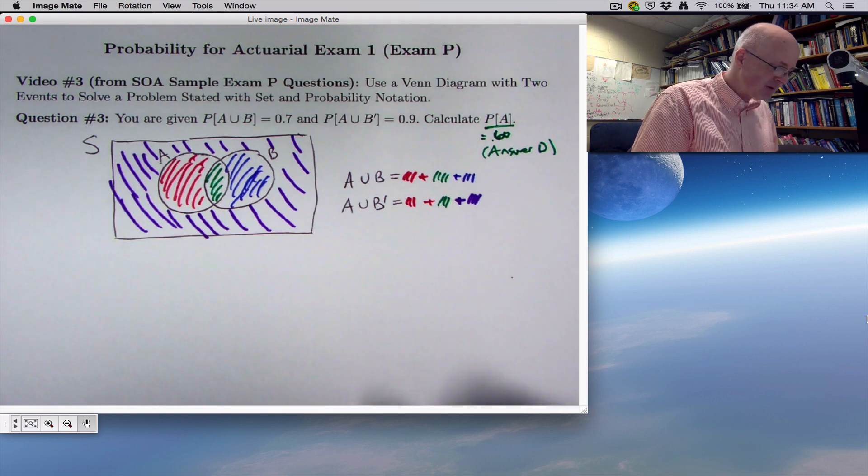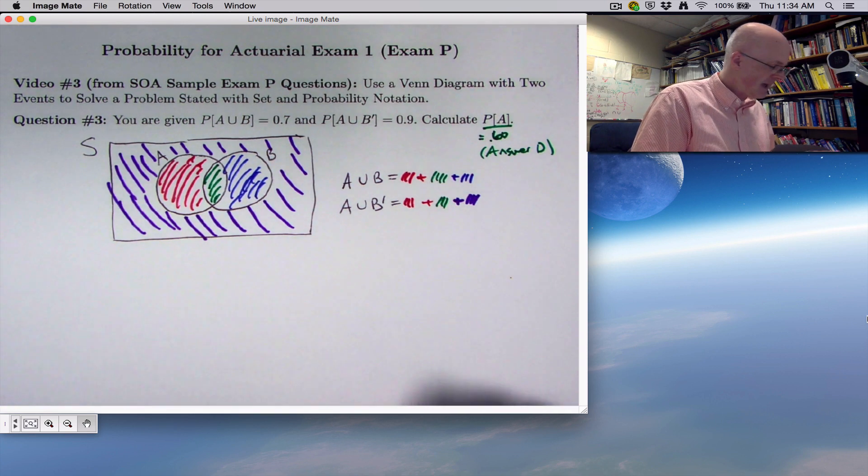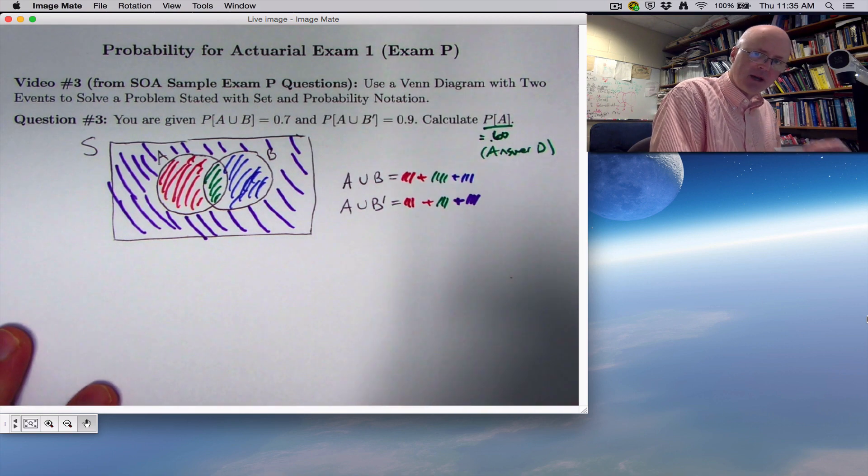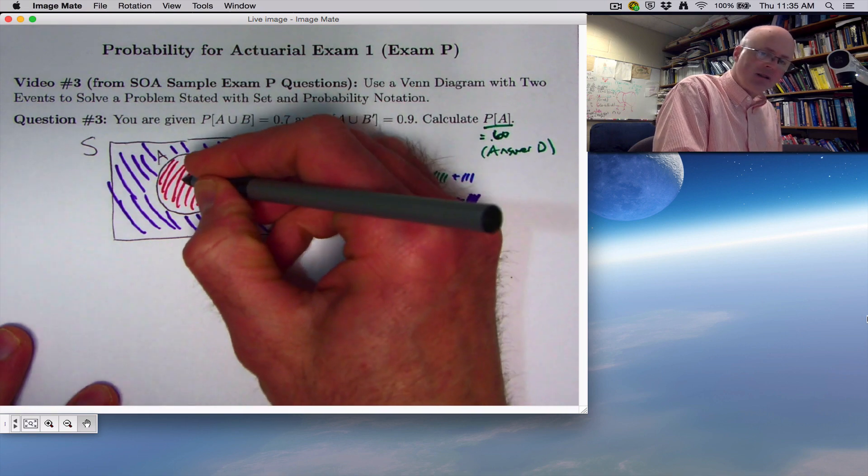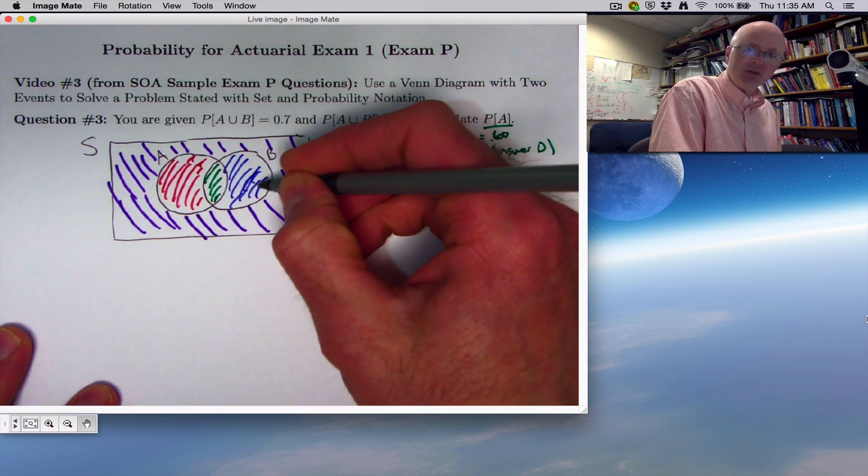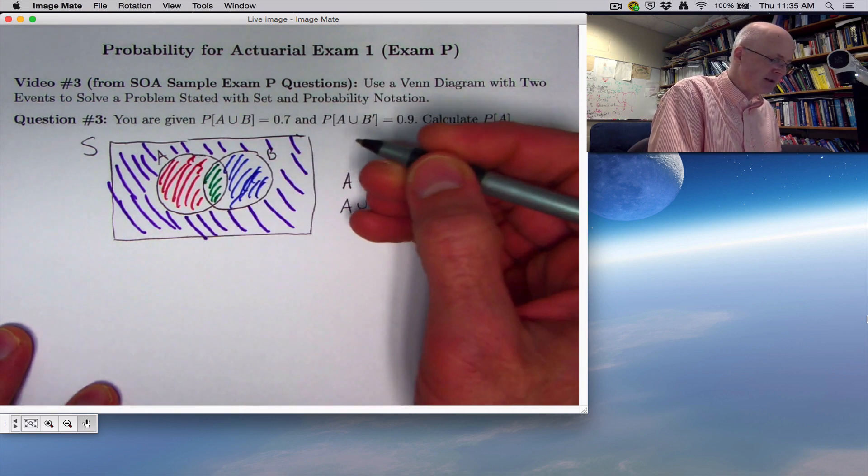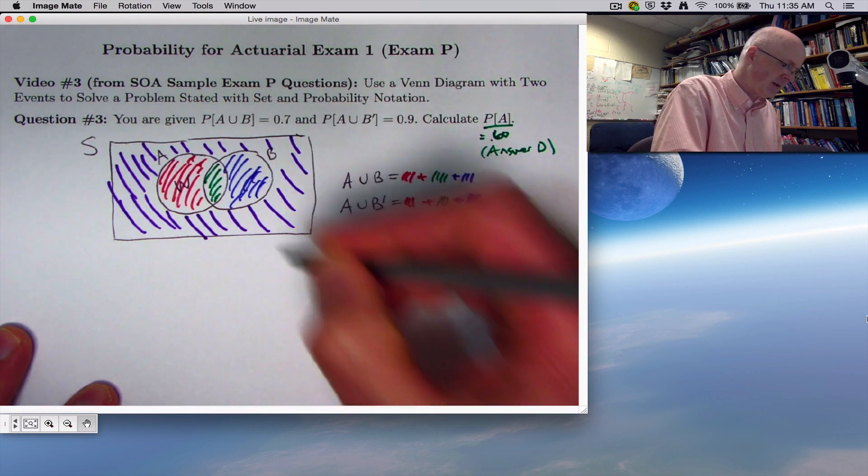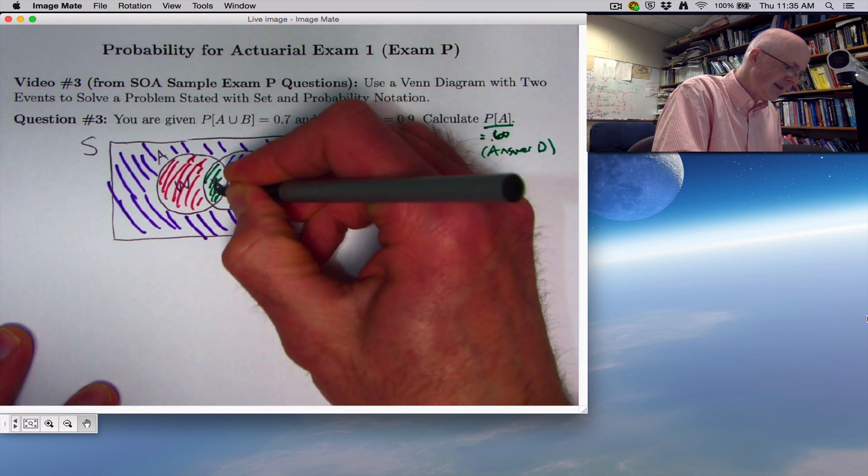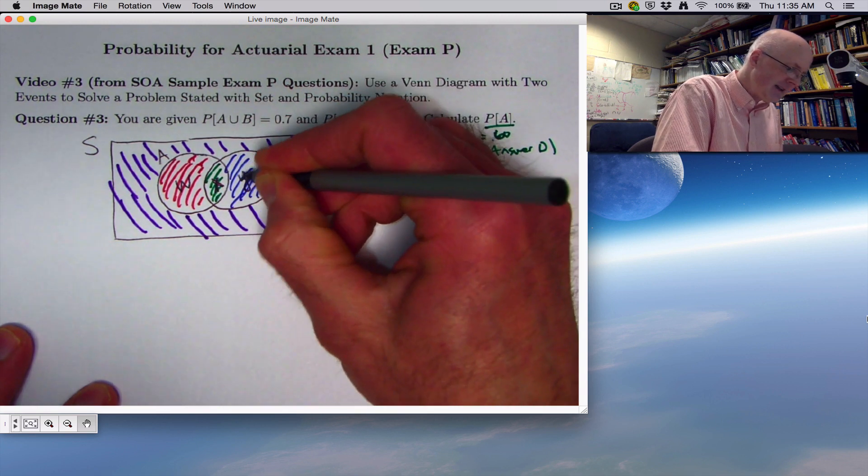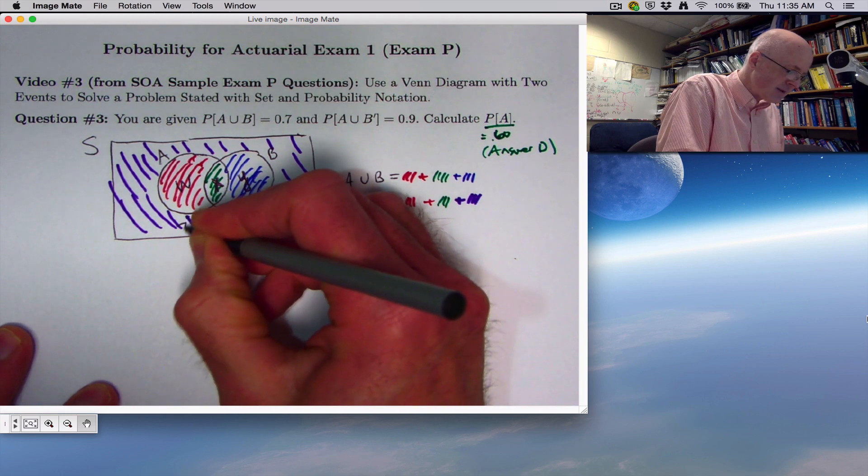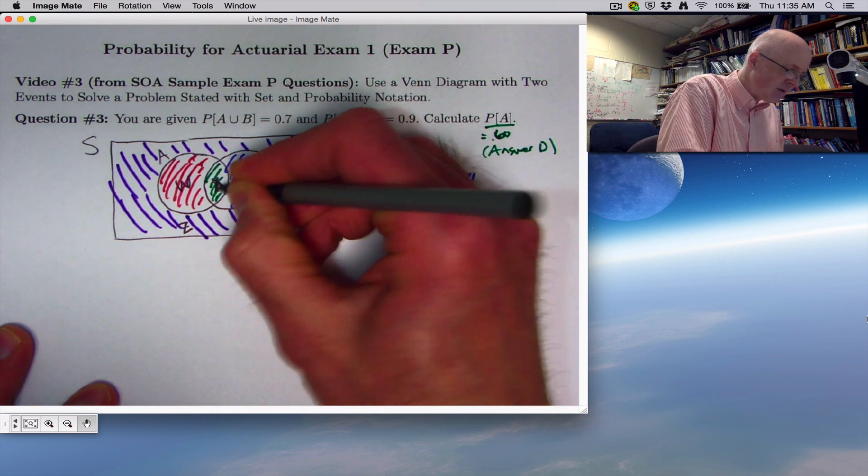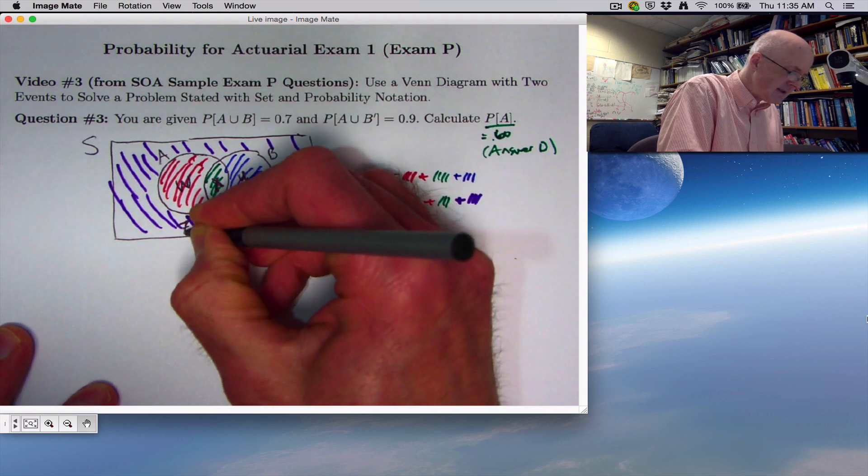And let's also use some algebra here. Go back to my black pen now here. That's not a marker. Let's label these four different regions with letters representing the probabilities to make the notation a little simpler. Let's call this one, say, w. That's a w there. This one, x. This one, y. And what's outside of all those with a z. Can you see those? w, x, y, z.